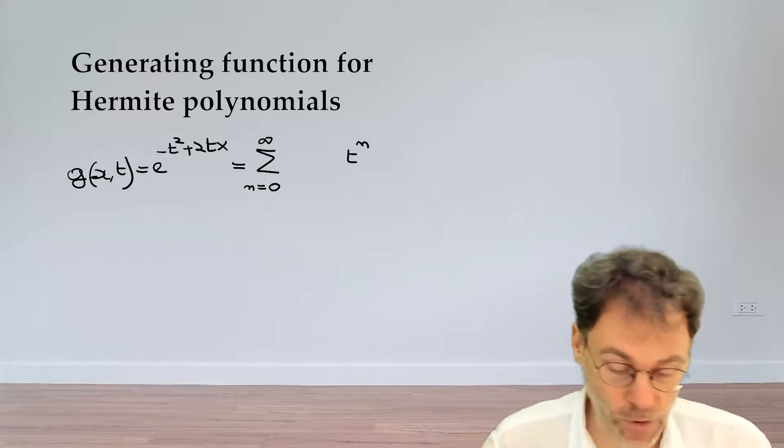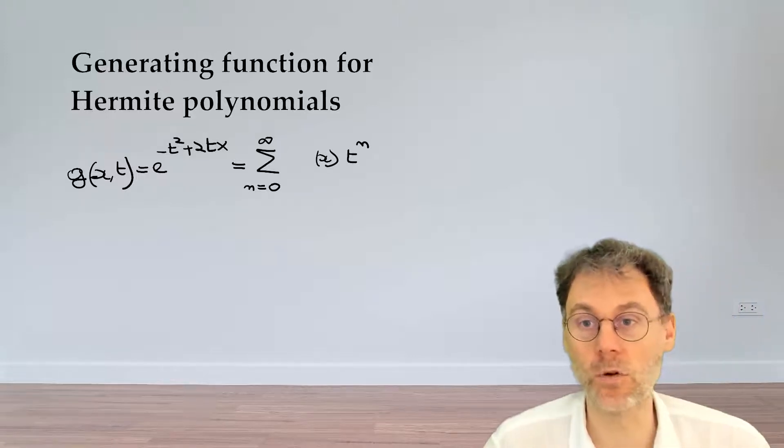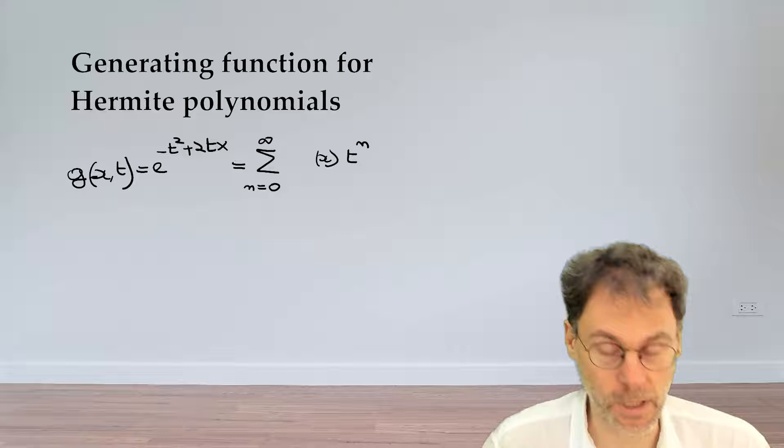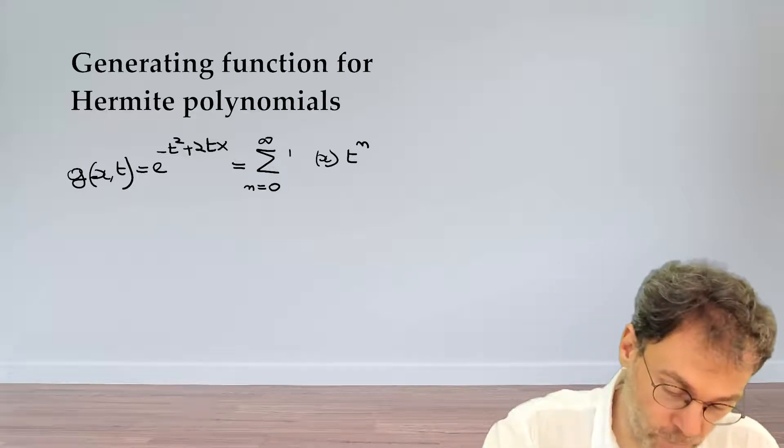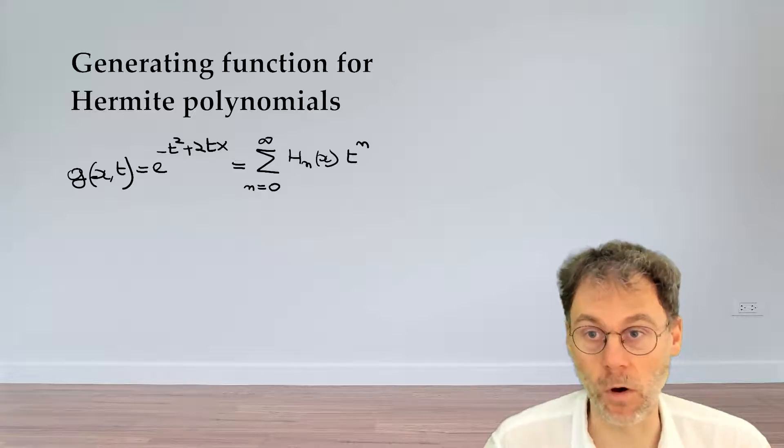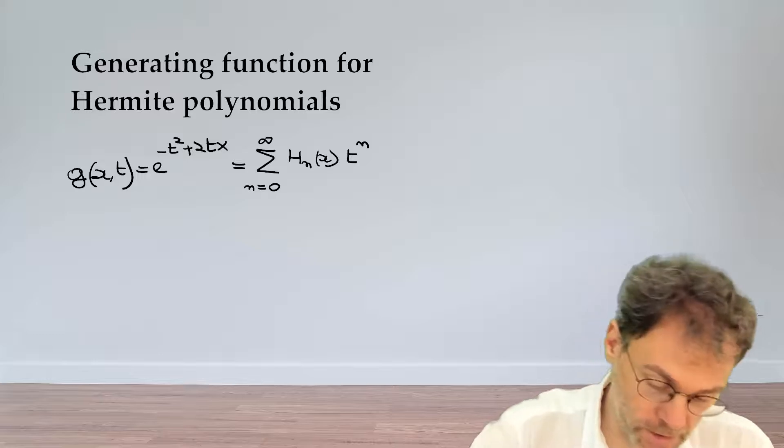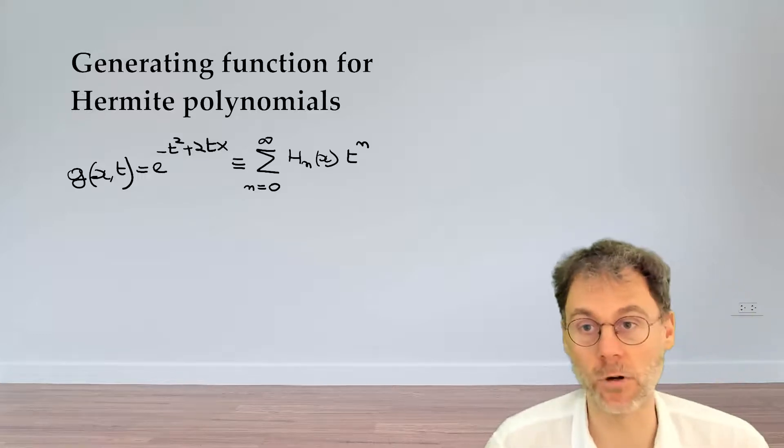The expansion coefficient will obviously depend on x, but rather than calling that expansion coefficient just a_n, we're going to call that expansion coefficient H_n. So this is the Hermite polynomial of order n, it's defined this way by using this expansion in the Laurent series.